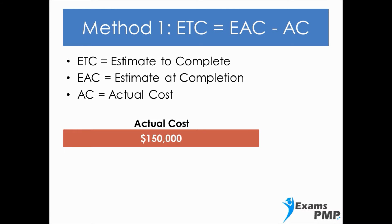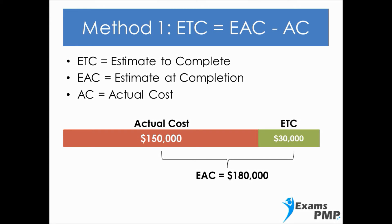Let's look at an example. Suppose your project has already used up $150,000 and your boss walks in asking how much more money is this project going to take. What he's really asking you is for the Estimate to Complete. At this point, you pull out your EVM spreadsheet and notice that the Estimate at Completion is $180,000. By plugging in the AC and EAC values into the formula, you determine that ETC is equal to $30,000, which means it would take $30,000 to complete the project.